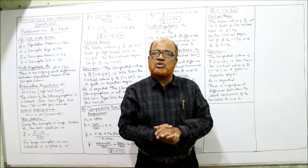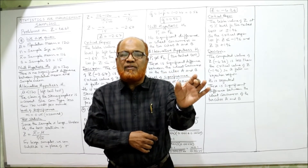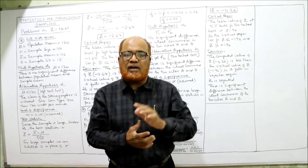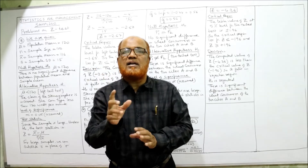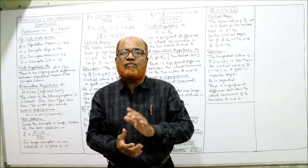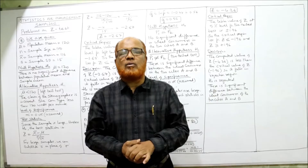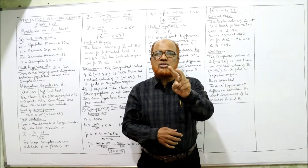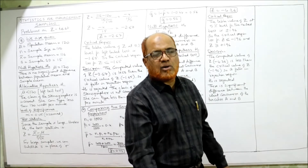We have selected 1000 people in town A; out of 1000 people, 400 are consumers of wheat. In town B we have selected a sample of 800; among those 800, 400 are consumers of wheat. This is a problem of comparing the proportions of two samples.